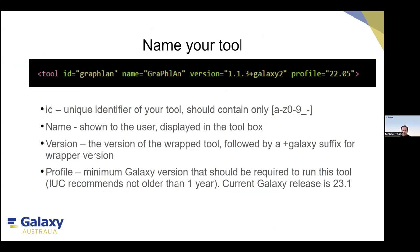The first line in the wrapper is a fixed format — you need to follow this requirement to make the tool's ID available, as well as the version. Versioning is important for both Galaxy and the tools. The tool has its own version, while the Galaxy version refers to the wrapper version. In this case, GraphLang is version 1.1.3, and the wrapper is number 2, meaning the wrapper started at 0 and has been updated over time as GraphLang added more parameters.